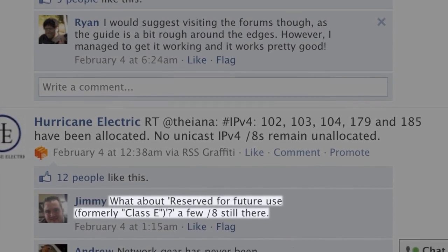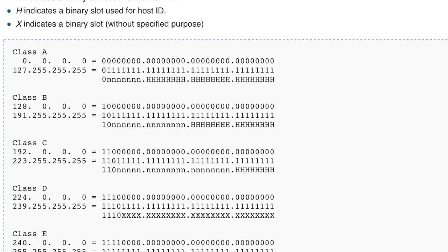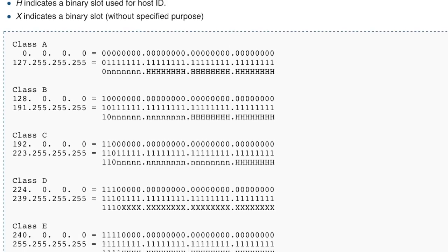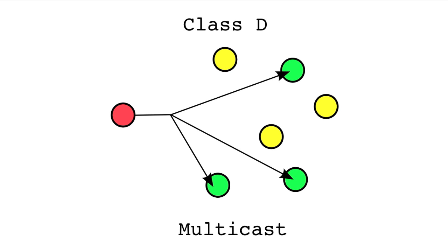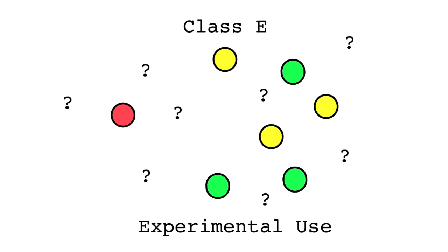In the beginning of it all, the entire range of v4 addresses was partitioned off into five classes. Class A, B, and C were general unicast, and Class D was multicast, but Class E was designated for experimental use.